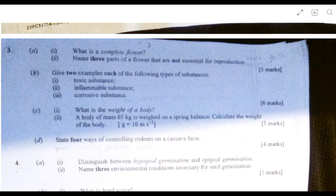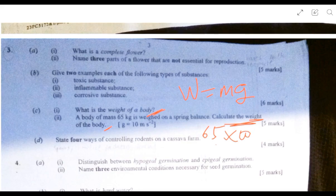The next question is asking: what is the weight of a body? The weight of a body is the force exerted on it due to gravity. This question is asking you to calculate the weight. Weight equals mass times acceleration due to gravity. The mass in the question is 65 and acceleration due to gravity is 10. So your answer is 650 Newton, the unit for force or weight.